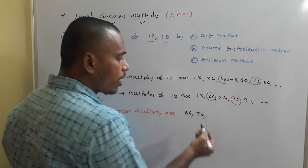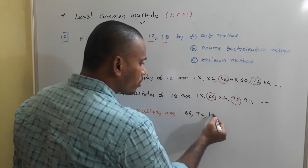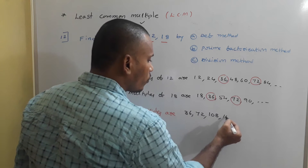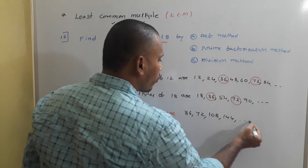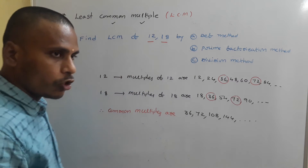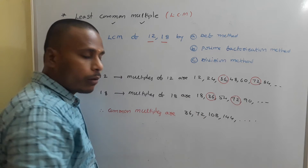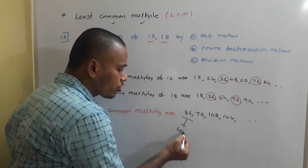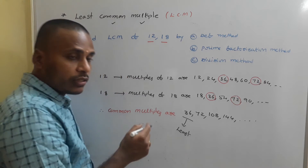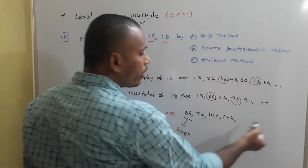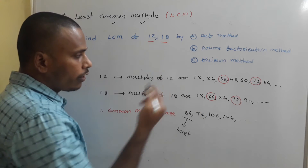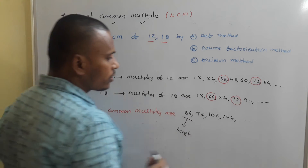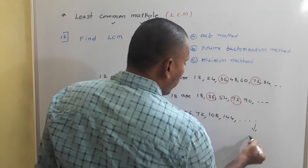The common multiples are 36, 72, 108, 144 and so on. Among these common multiples, 36 is the least one. So 36 is the least common multiple. Since multiples exist infinitely, the highest common multiple does not exist.